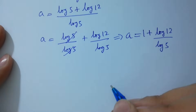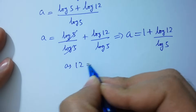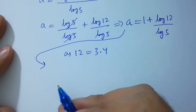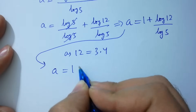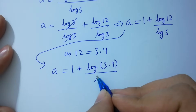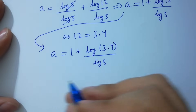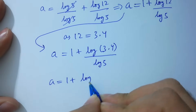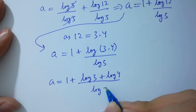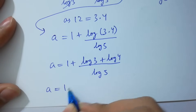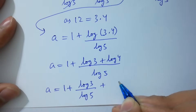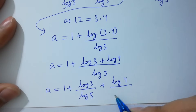Since 12 equals 3 times 4, a equals 1 plus log of 3 times 4, over log 5. Expanding: a equals 1 plus log 3 plus log 4, over log 5, which gives a equals 1 plus log 3 over log 5, plus log 4 over log 5.